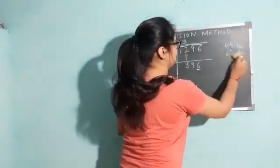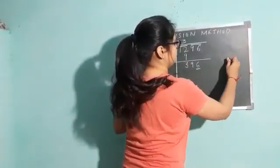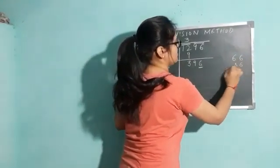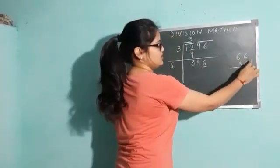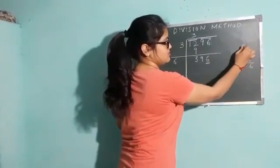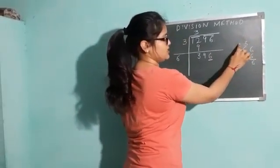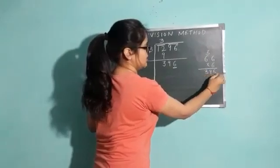Next number is 6. Let us try the next number. 6 times 6 are 36, 3 carry. 6 times 6 are 36. 36 plus 3 is 39.